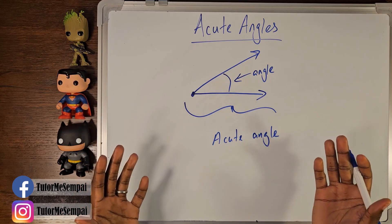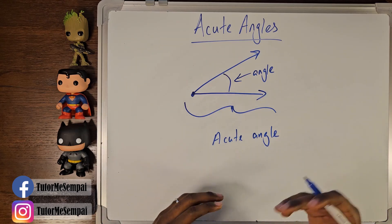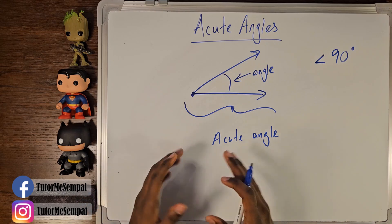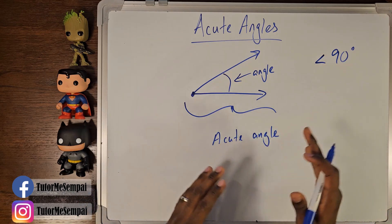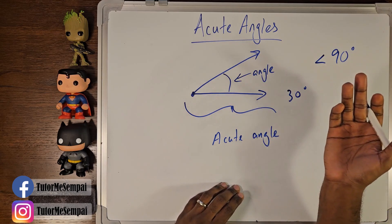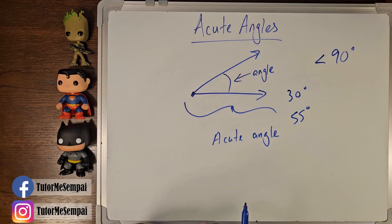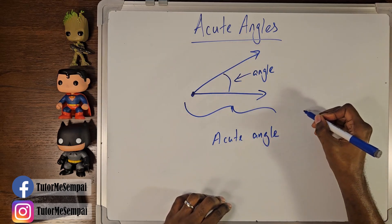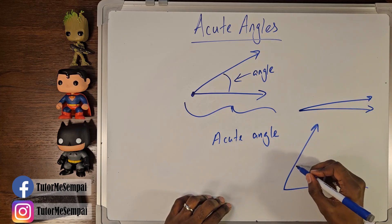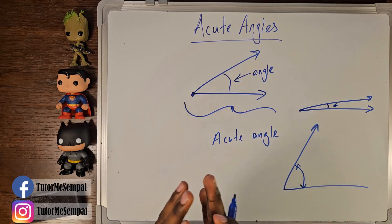What makes this an acute angle? Well, acute is gonna mean small in this case. It's going to be less than 90 degrees. Degrees is what we use to measure our angles. So this could be 30 degrees, 45 degrees, 55 degrees — it doesn't really matter. As long as it's less than 90 degrees, it's an acute angle. Acute angles look a lot of different ways — you can have something as thin as that or as wide as this. These are all acute angles because they are all less than 90 degrees.